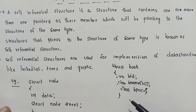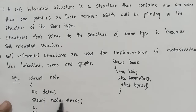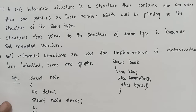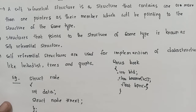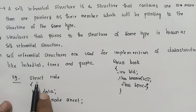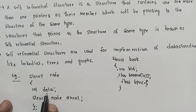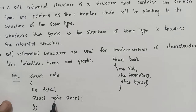In a self-referential structure, one of the structure members is a pointer variable. These pointer variables point back to the same structure type, making it self-referential. We create a node structure where a data member and a next pointer are defined, and that pointer points to structure node again.